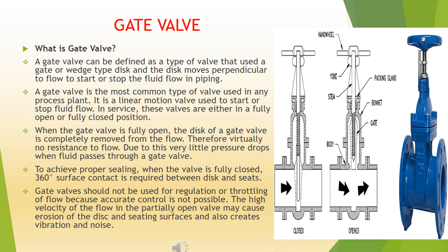To achieve proper sealing when the valve is fully closed, 360 degrees surface contact is required between disc and seats. Gate valves should not be used for regulation or throttling of flow because accurate control is not possible. The high velocity of the flow in the partially open valve may cause erosion of the disc and seating surfaces and also creates vibration and noise.